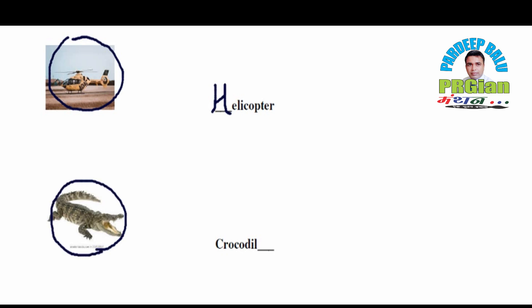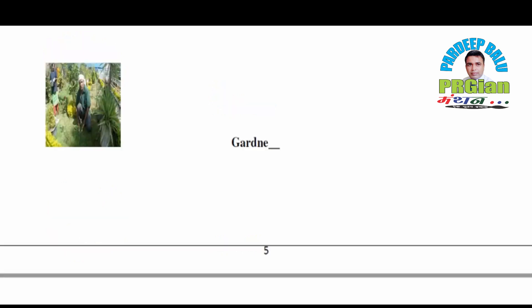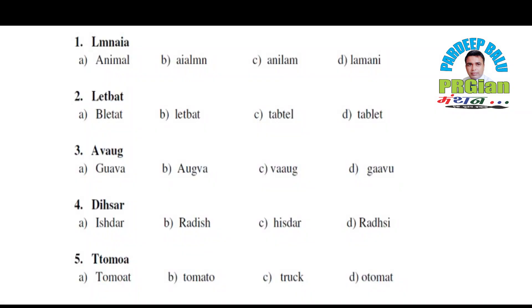Move ahead — whose picture is this? Crocodile. So what will come here? C R O C O D I L E — Crocodile. Next, who is in the picture? It's a Gardner. So what will the spelling be? G A R D N E R — Gardner. Okay? So this exercise is complete. Let's move ahead.